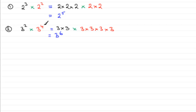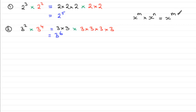What this suggests algebraically is that if we've got some value x to the power m, and we multiply this with x to the power n — the same base value — then the result is x repeatedly multiplied a total of m plus n times. So we add our powers. That's our general result.